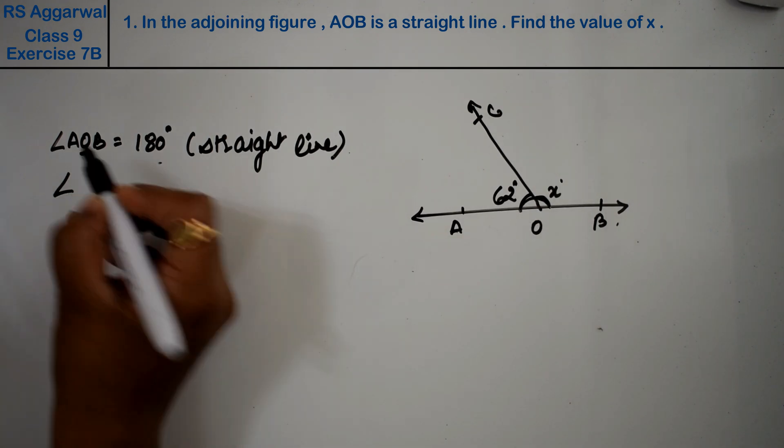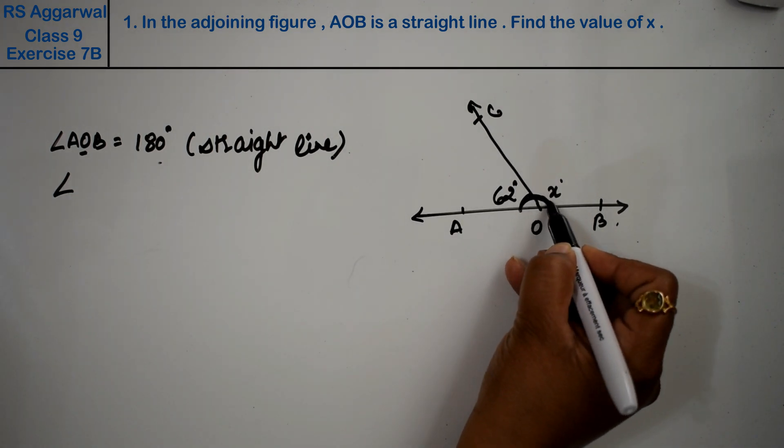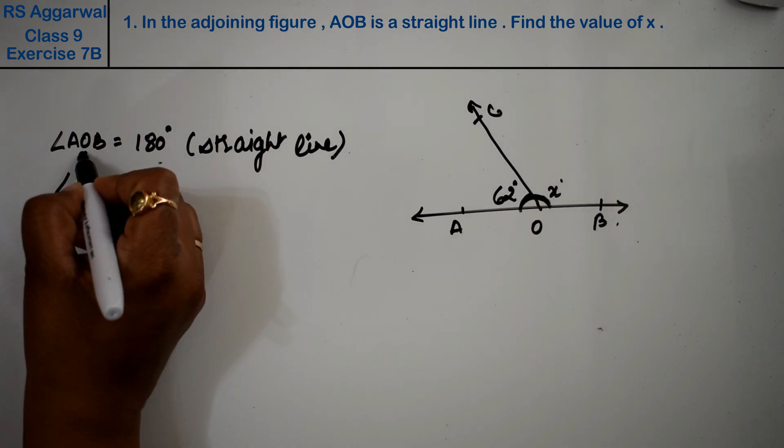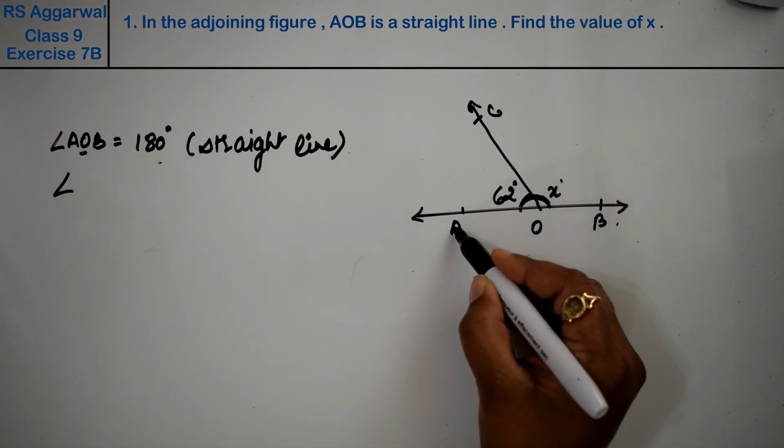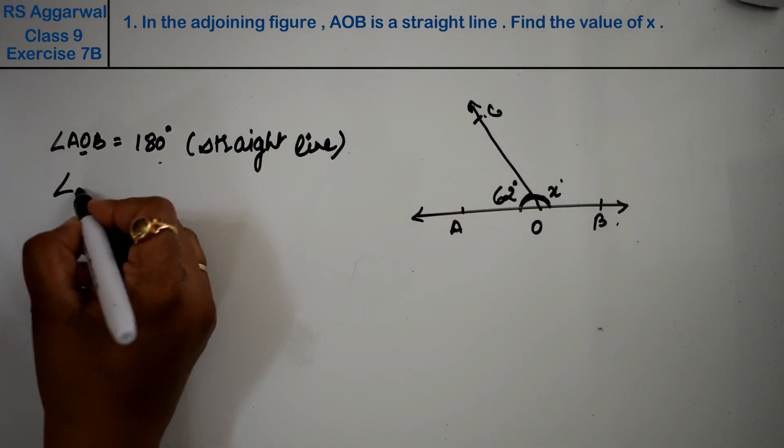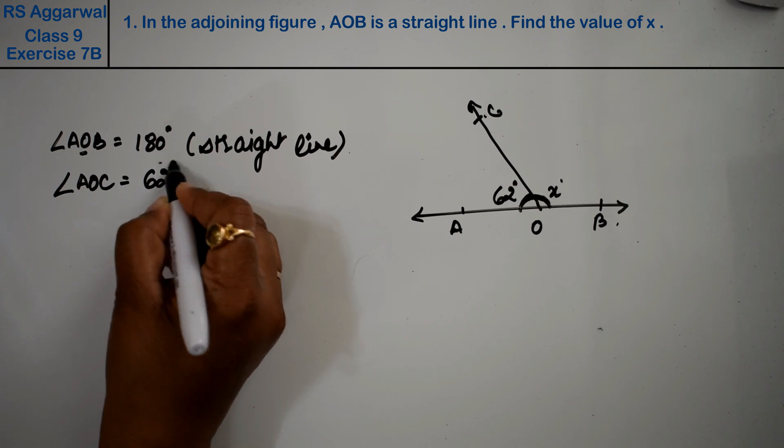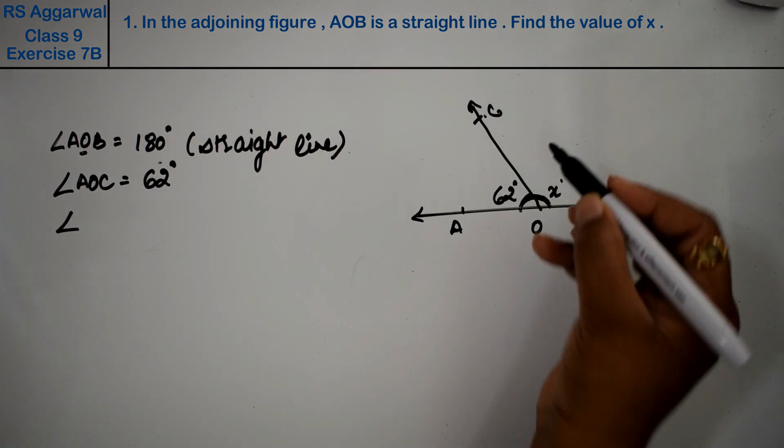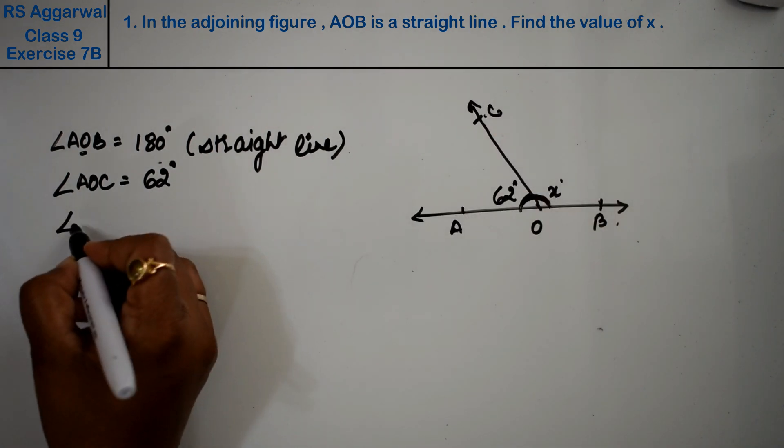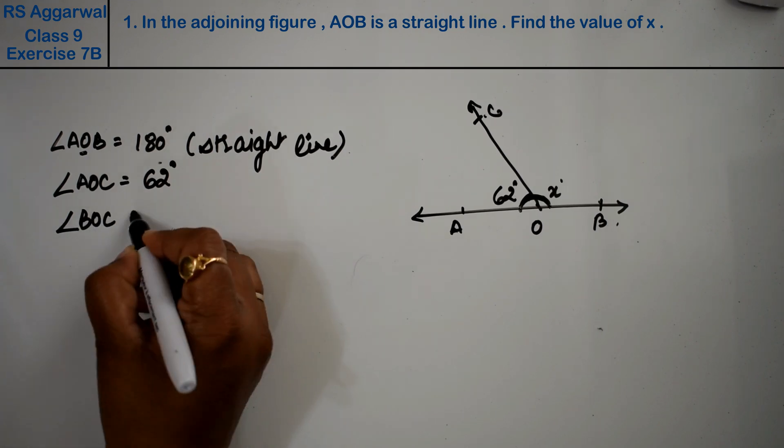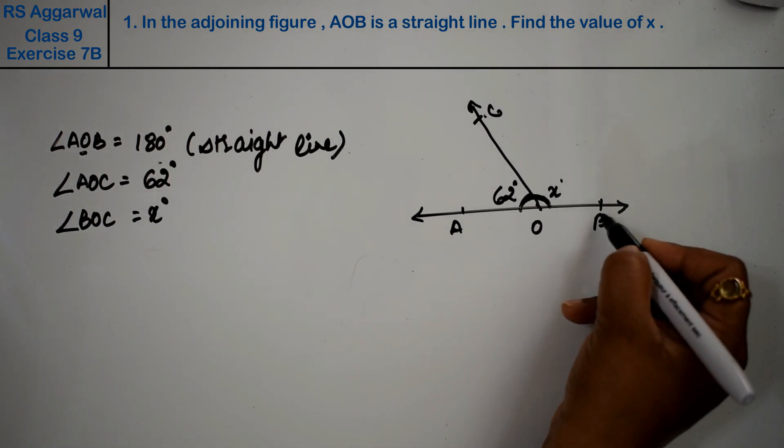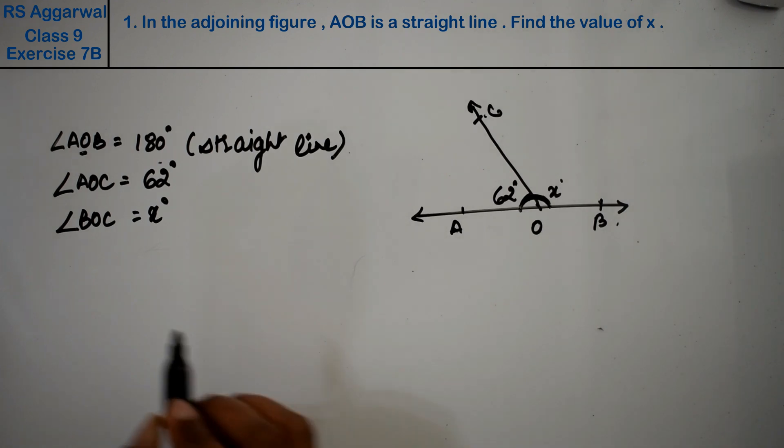See, we mentioned 180 degrees, so O is in the middle. Now we have 62 degrees to mention, so we'll mention AOC. AOC is given as 62 degrees, and angle BOC is given as x degrees.